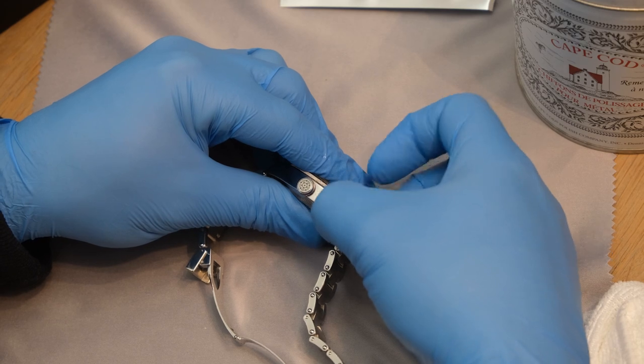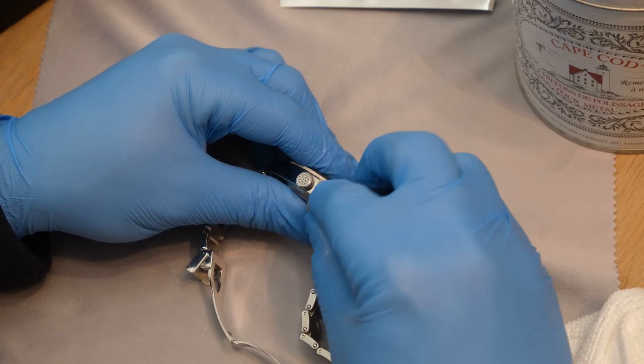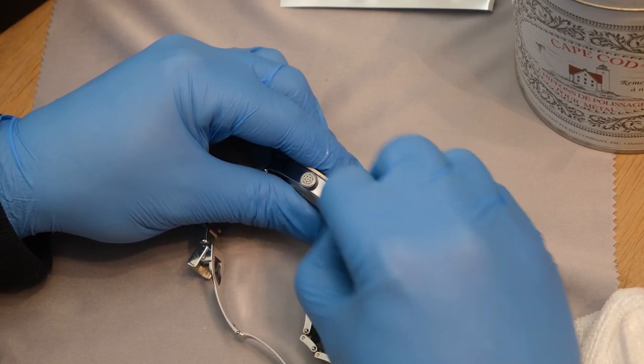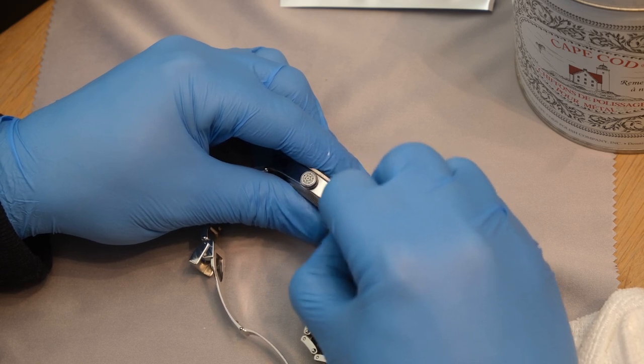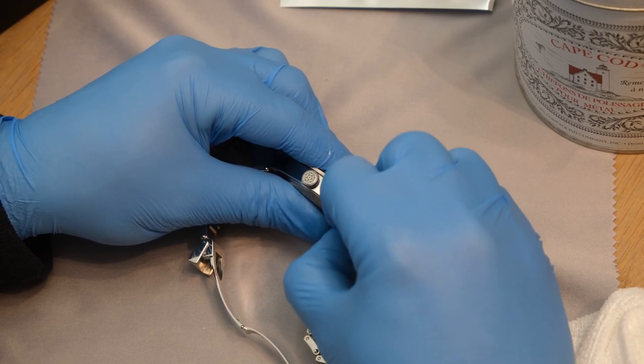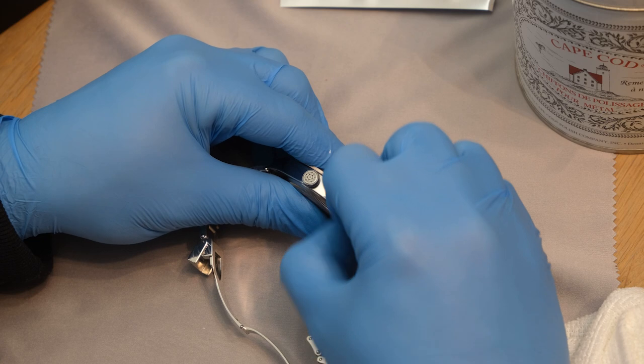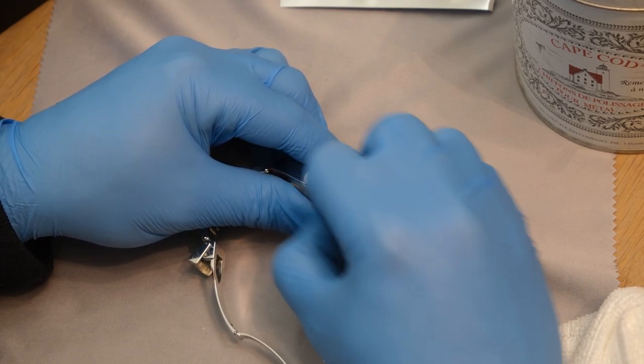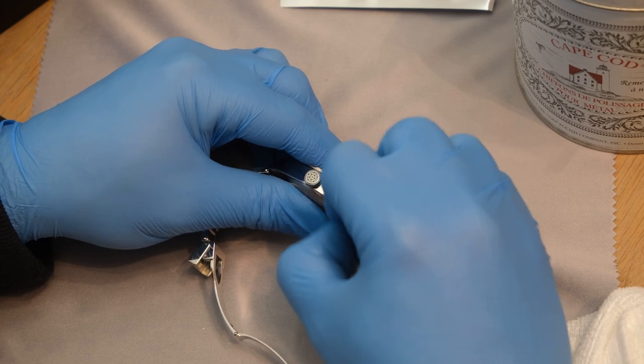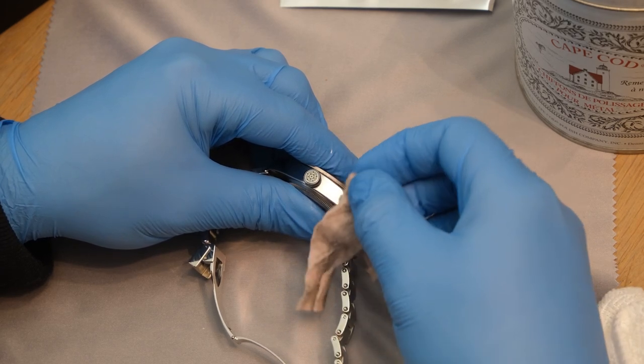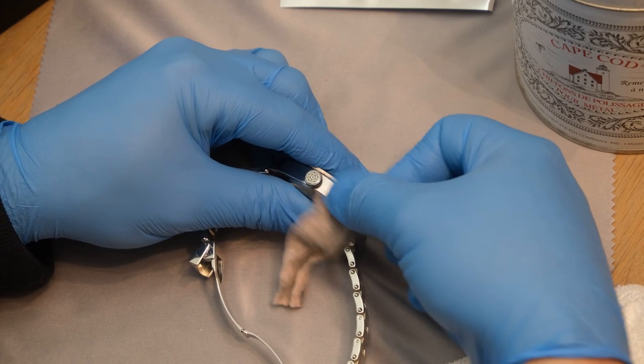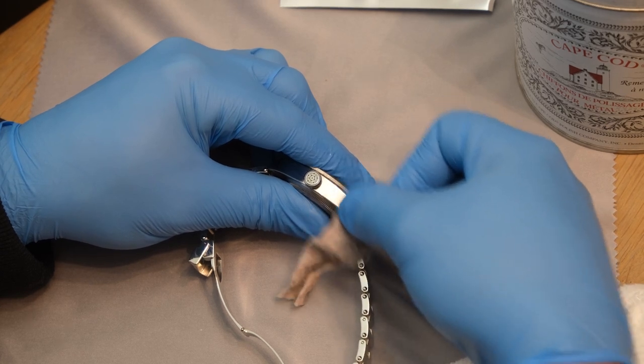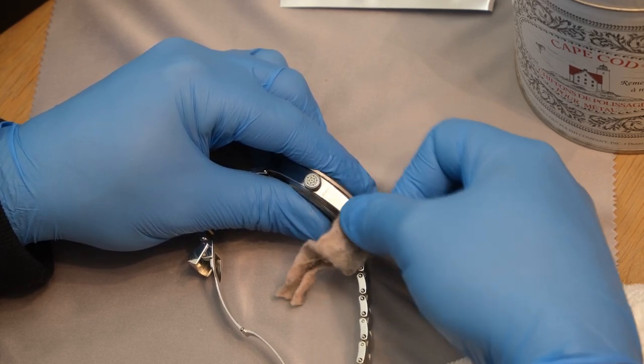Interesting note, Rolex actually owns their own foundries. So they have proprietary alloy compositions that only they are allowed to use. So they can experiment with metallurgy, come up with new blends and brands and cocktails of metals.